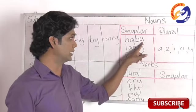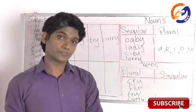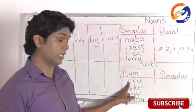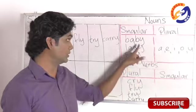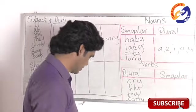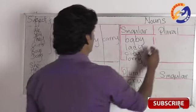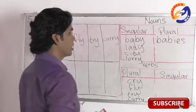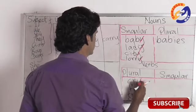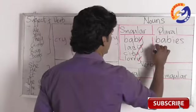For example, 'baby' ends in 'y' and the letter before the last is not a, e, i, o, u. 'Cry' ends in 'y' and the letter before the last is not one of a, e, i, o, u. A letter which is not a vowel is called a consonant. So what do we do? We drop the letter 'y' and add 'ies'.